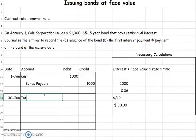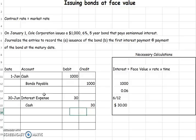So the entry is interest expense for $30 — that's why they agreed to lend money, because they were expecting these interest payments every six months. At the end of the term, five years later on January 1, when we go to repay the bond, we reduce our bonds payable liability by $1,000 and pay them back their cash.